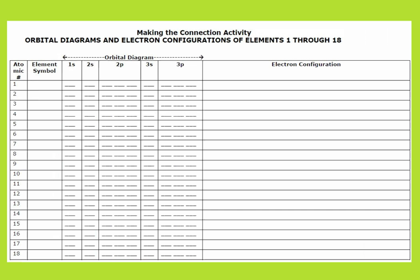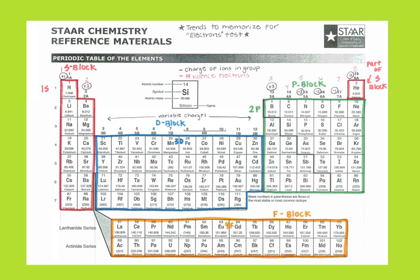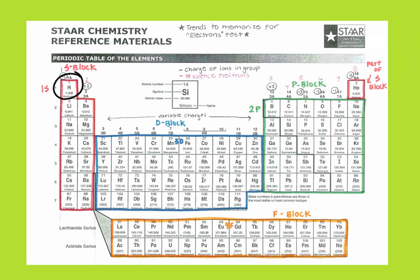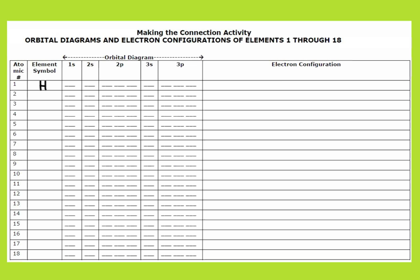The first thing you want to have is the electron configuration written out. So if you're looking at this activity, if the atomic number is 1, we are obviously talking about hydrogen. I'm going to label that on my activity — the element symbol is hydrogen. The electron configuration for hydrogen is very simple. We are in the 1 energy level, the S sub level. Hydrogen just has 1 electron — that's why its atomic number is 1. So I'm going to write out the electron configuration of 1s1. It just has 1 electron, so that's all it should be.